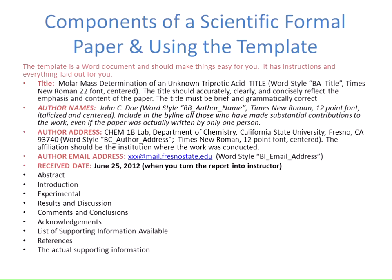Now let's look at the components of a scientific formal lab report using the lab template. There is a formal report template on Blackboard as a Word document that should make things easy — it has instructions laid out for you. The basic components begin with the title. In the template, simply highlight the section that says 'title,' start typing, and it will appear in the correct format: Times New Roman, 22-point font, centered.